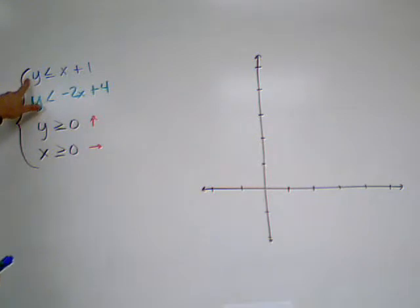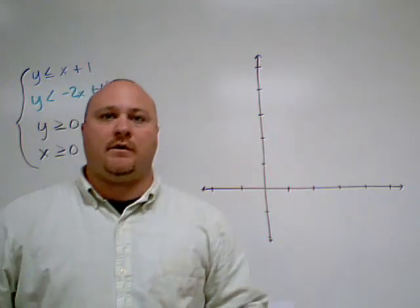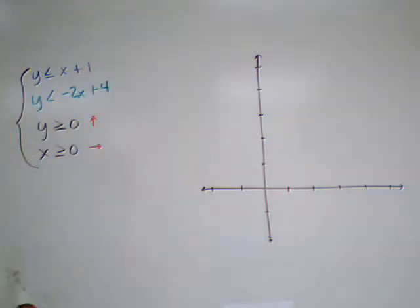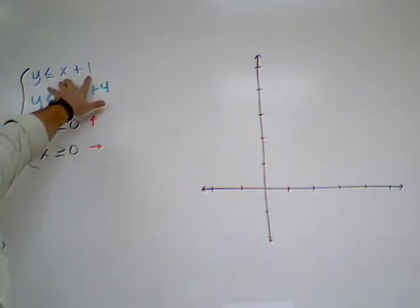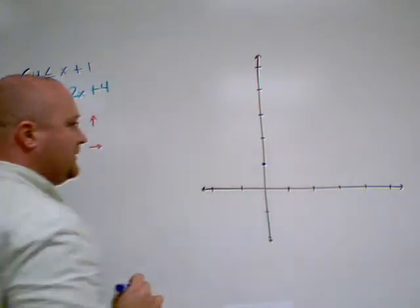Alright, let's go ahead and graph the blue one, which is y is less than or equal to x plus one. And whenever we have less than or equal to or greater than or equal to, we're going to have a solid line, because that line is going to be included. So all I need are a couple of points. So my y-intercept is actually going to be at positive one, so I know that point is going to be on my line.